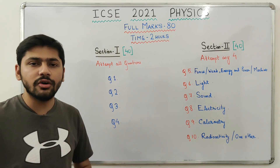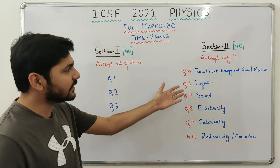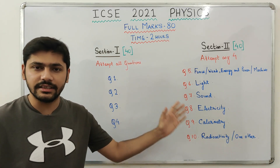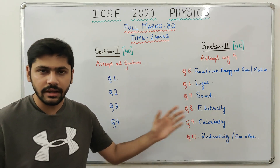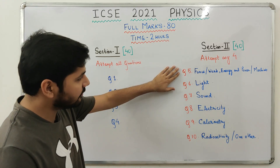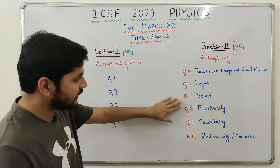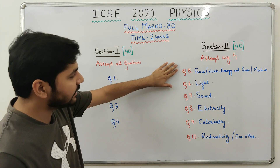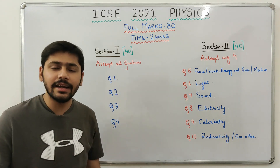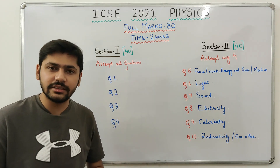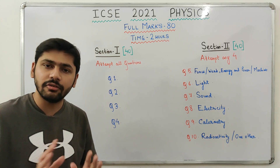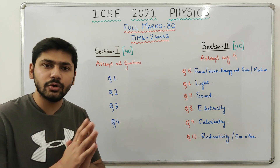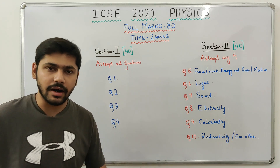Moving on to Section 2, also 40 marks. You will need to attempt any 4 out of 6 questions — questions 5 through 10. Each question is 10 marks, so 4 x 10 gives you 40 marks.